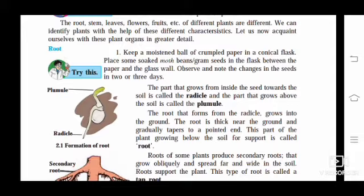You can see in figure 2.1, formation of root. The root that forms from the radicle grows into the ground. The root is thick near the ground and gradually tapers to a pointed end. This part of the plant growing below the soil for support is called a root.